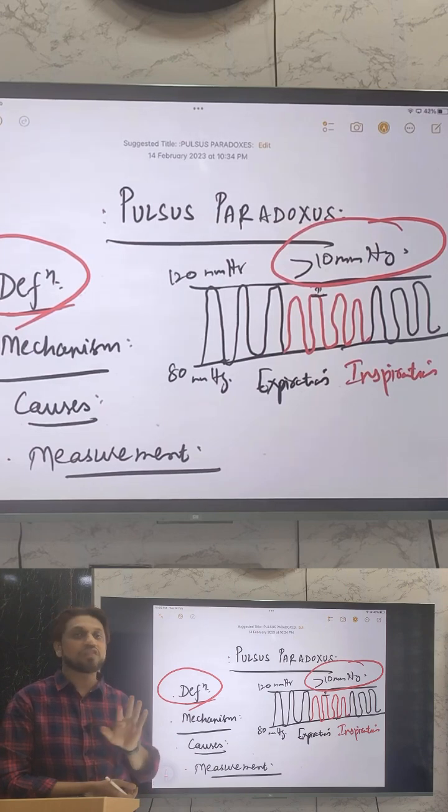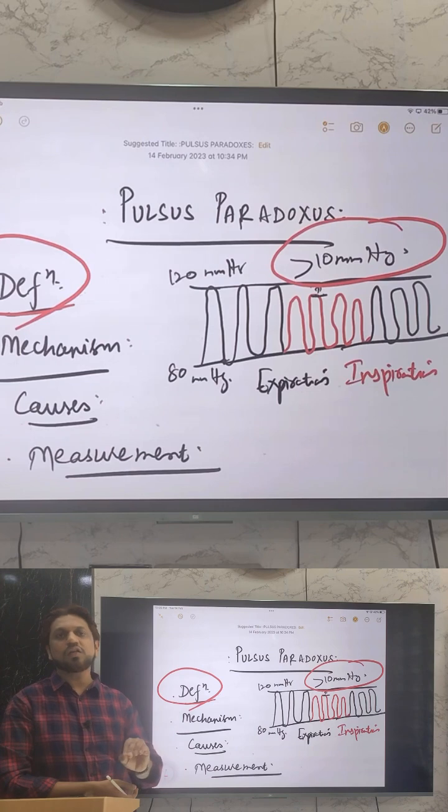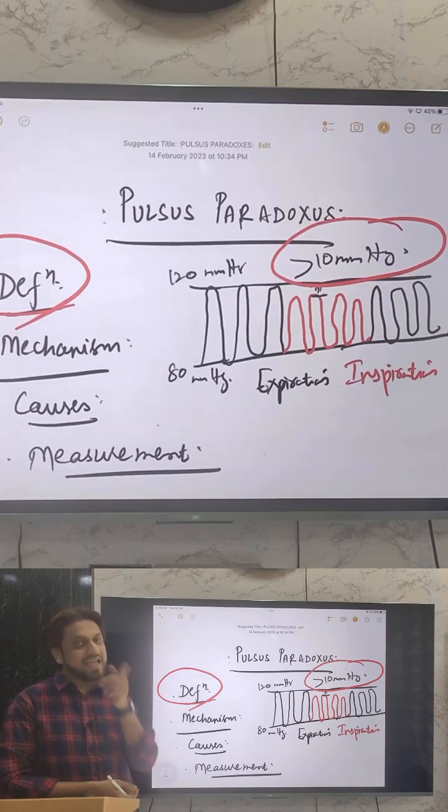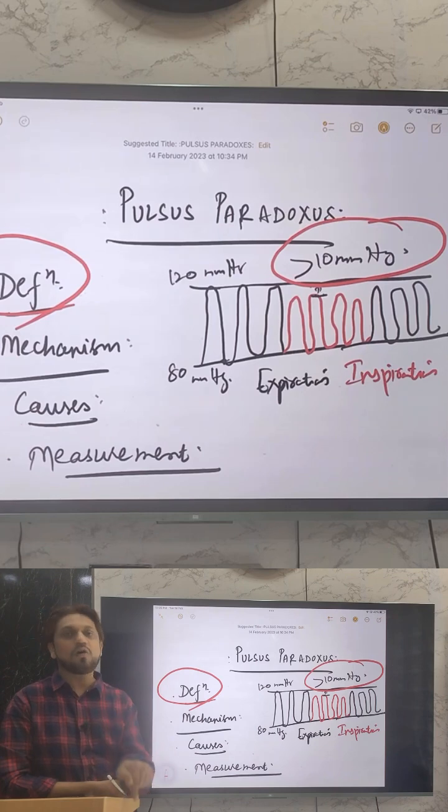Normally there is a decrease, but in some clinical conditions it is exaggerated and there is a further fall in the systolic blood pressure during inspiration. That exaggerated further fall of the systolic blood pressure during inspiration is known as pulsus paradoxus. Hope the definition is clear.